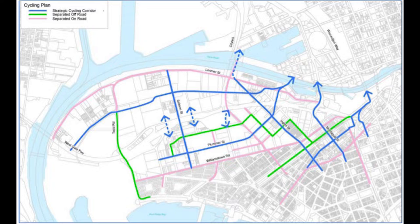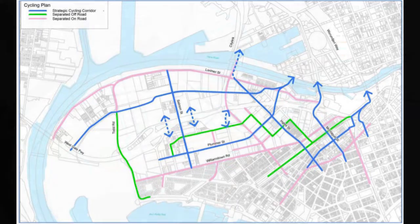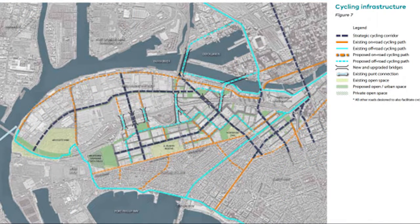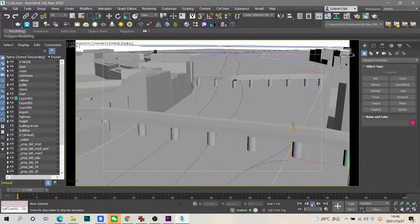Similar to the walking plan, some cycling areas would be separated off the pedestrian area and some would be on them. Combined with the existing situation, there would be two construction plans in Fisherman's Bend: one is building bridges for pedestrians and cyclists, and another is building cycling paths on or off the pedestrian area, including the area under the tunnel.